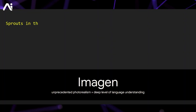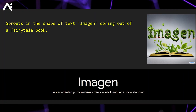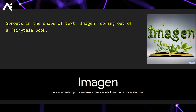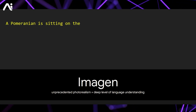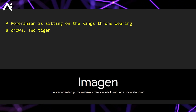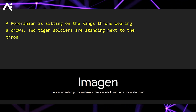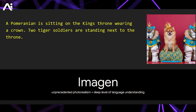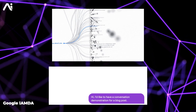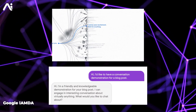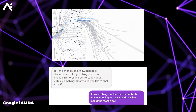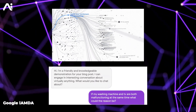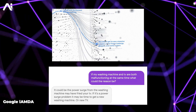Powered by Imagen, a text-to-image diffusion model, SGE excels at producing realistic images by deeply understanding textual input. Imagen operates within Google's LaMDA, a powerful language model proficient in handling natural conversational language.